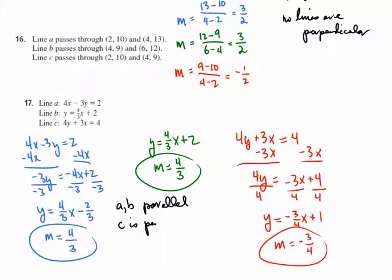Whether we're given graphs, pairs of points, or equations, we need to determine the slope of each line and compare them. If the slopes are the same, the lines are parallel. If they are opposite signs and reciprocals, they will be perpendicular.